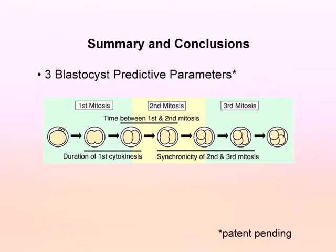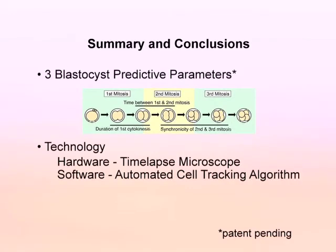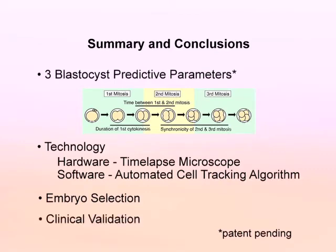Based on the scientific findings of the Nature Biotechnology paper, which demonstrated the use of specific cell cycle parameters to accurately predict by day two of development whether a given embryo has the potential to become a blastocyst, and the development of the technology described here, there is the potential to translate this scientific research into clinical practice and improve embryo selection. Naturally, clinical validation is needed to verify this.